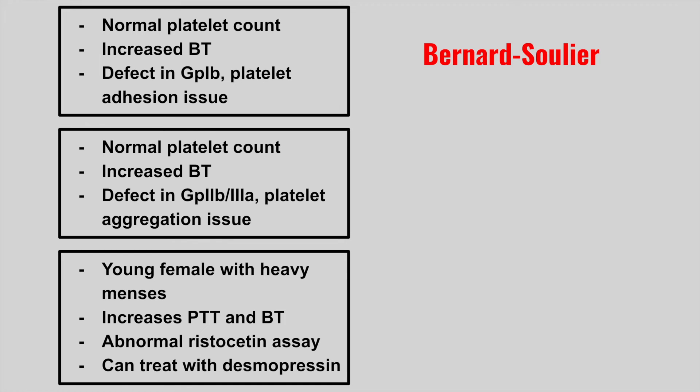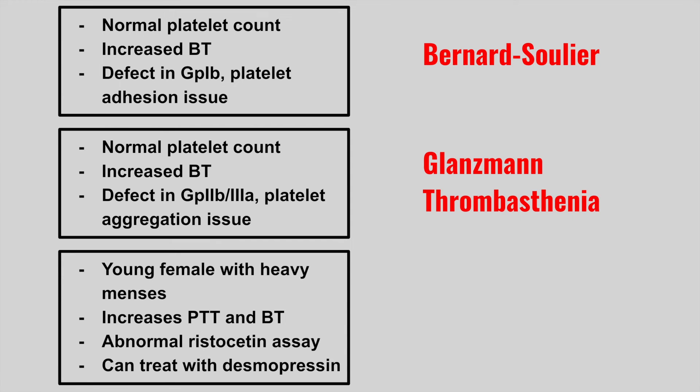Next, we have a patient with a normal platelet count, increased bleeding time, a defect in GP2b/3a, and it's a platelet aggregation issue. This is Glanzmann's thrombasthenia.